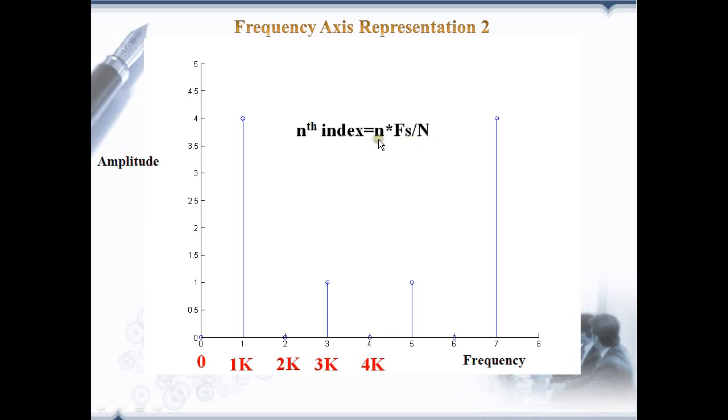We can find the analog frequency of the particular index by the equation n*fs by N. Small n is the index number and capital N is the number of points. This method has the advantage of representing the frequency data details in terms of real world meaning. But the downside is that different applications have different sampling rates and so different representation of the frequency axis. Hence, we are not using this method generally in DSP applications.